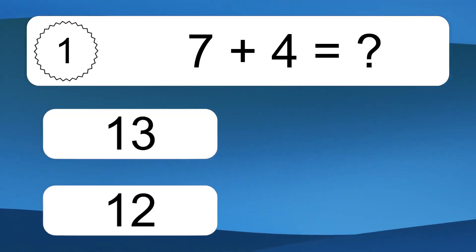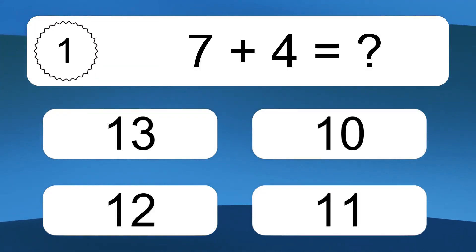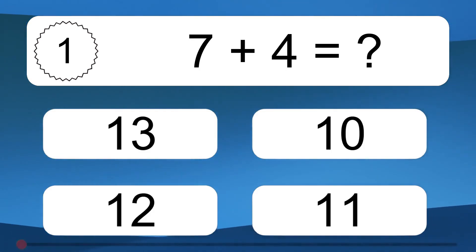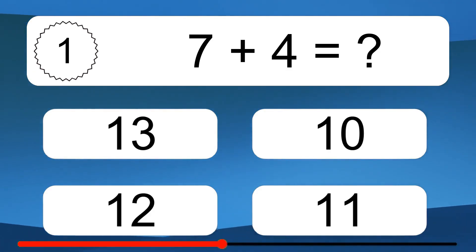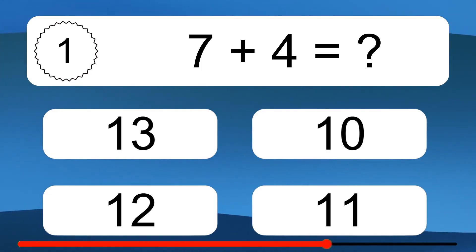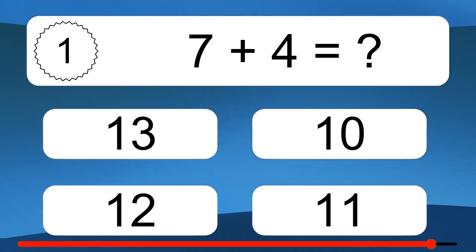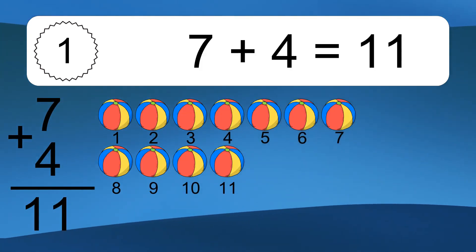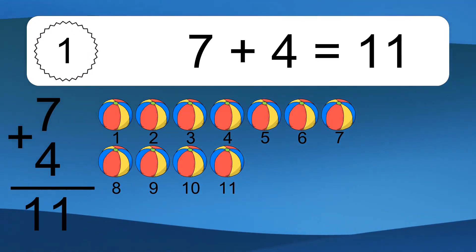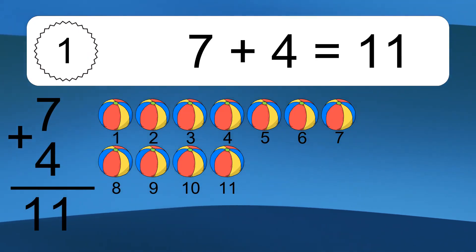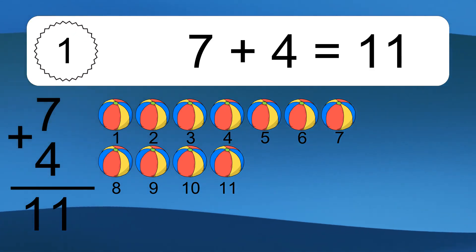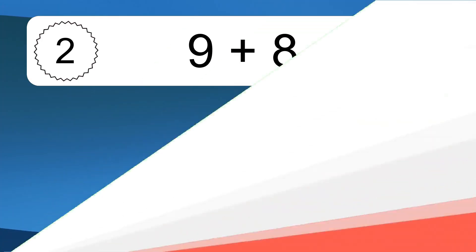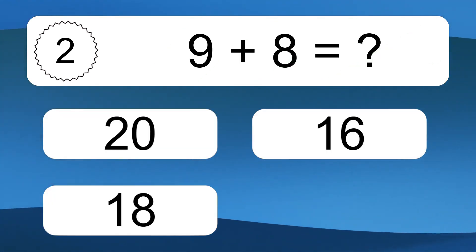7 plus 4 equals what? 7 plus 4 equals 11. Let's count it: 1, 2, 3, 4, 5, 6, 7, 8, 9, 10, 11.